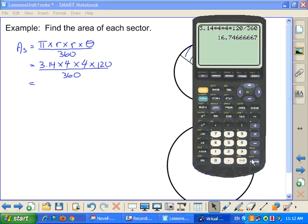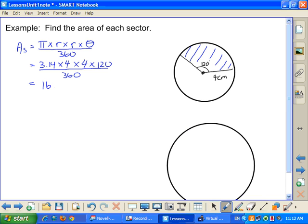And we get 16.7. The units were given to me in centimeters, which means I'll be in centimeters. And I'm calculating an area, so it's going to be squared. So the area of that pie segment is 16.7 centimeters squared.